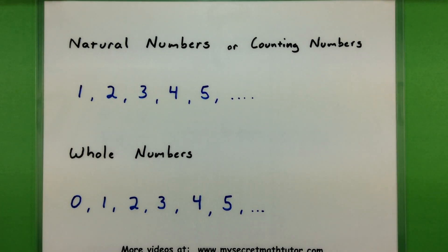So the first type of numbers that you're usually exposed to are the natural numbers, or what we sometimes call the counting numbers.